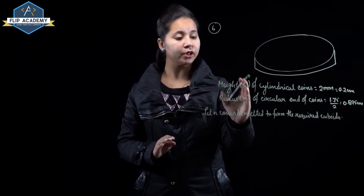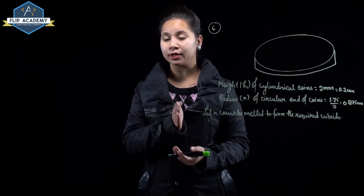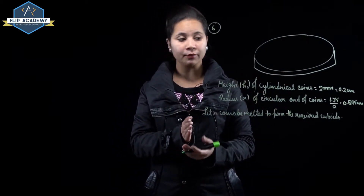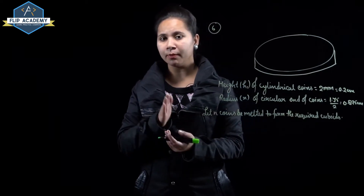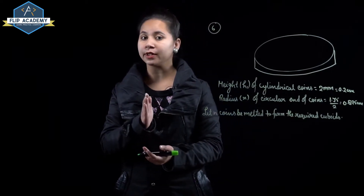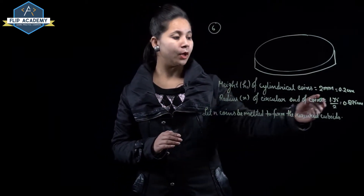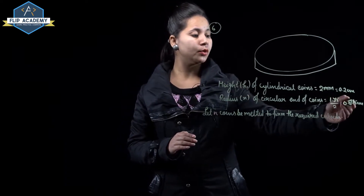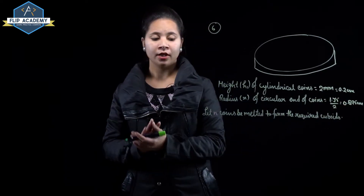Radius of the circular end of the coin = diameter/2 = 1.75/2 = 0.875 cm, since the diameter given was 1.75 cm.